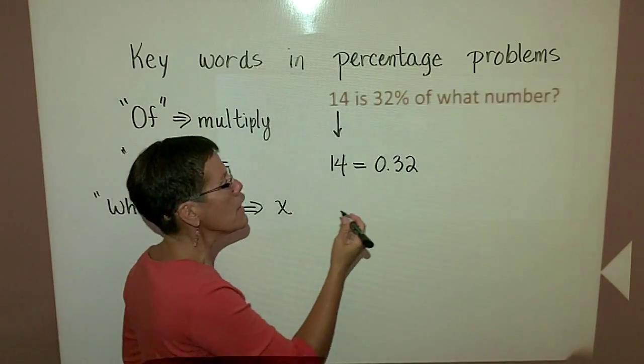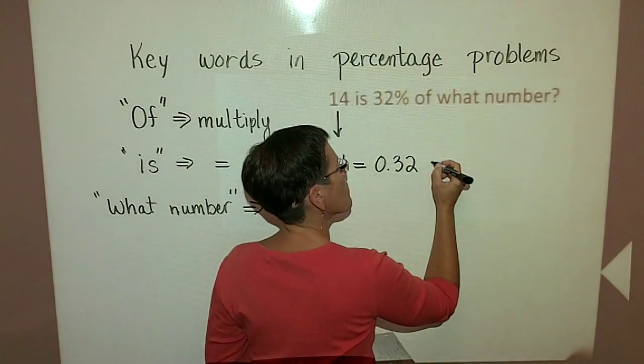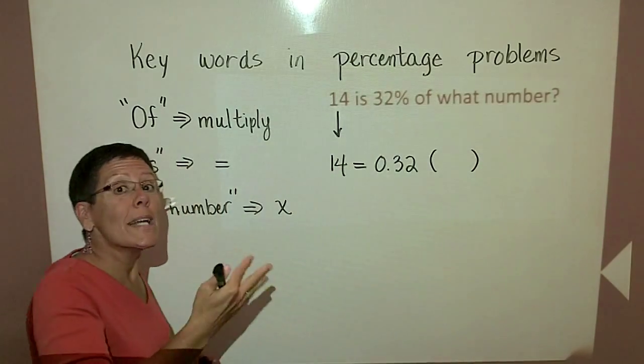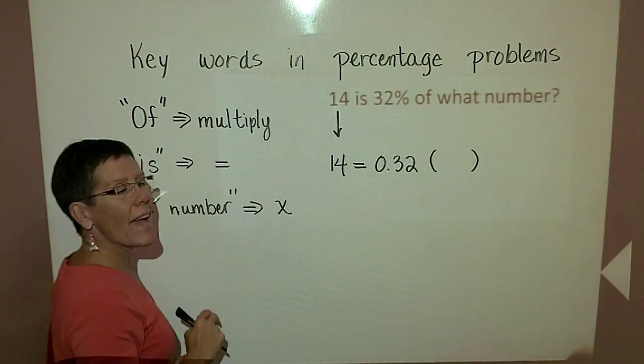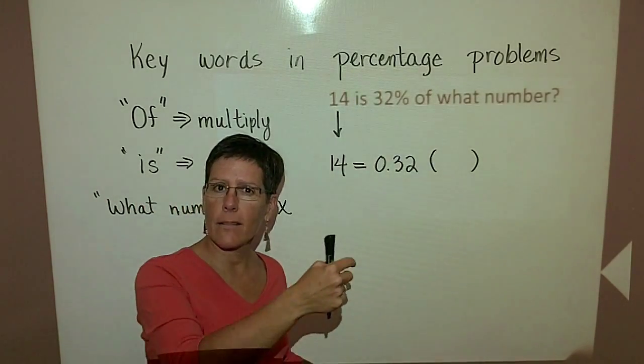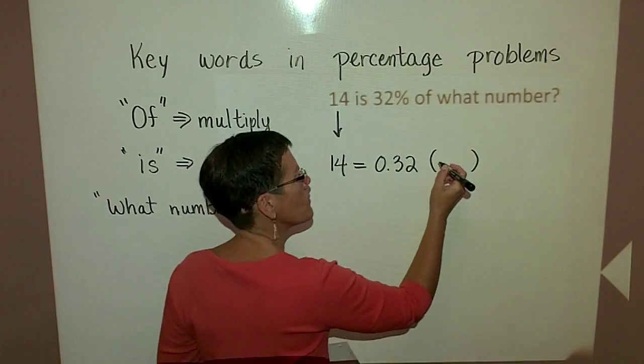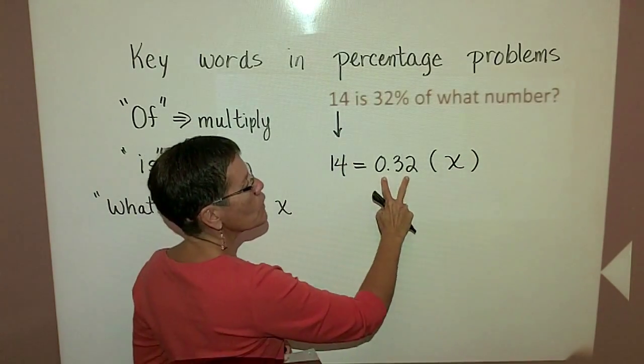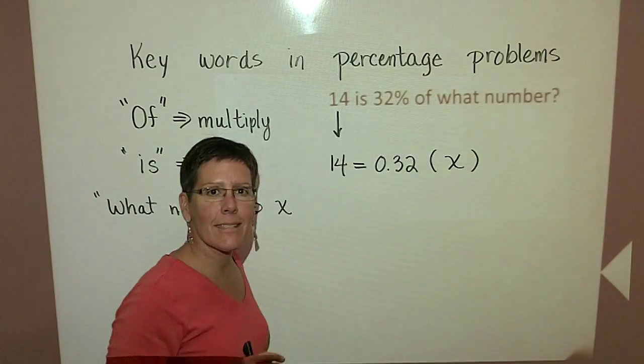Of means to multiply. Now I'm going to put parentheses here, because for the what number, I want to put in the letter X. If I had put in X to represent multiply, I would have had X and X side by side. That's very confusing, so I'm going to put it like this. 32% of X.